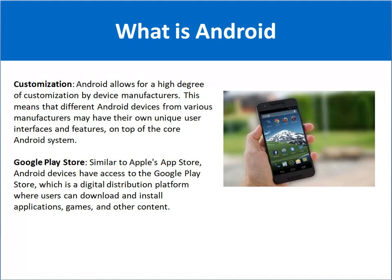Customization is also very possible in the Android operating system. Different manufacturers use Android for their devices and many manufacturers may have their own unique user interfaces and features on top of the core Android operating system. For example, if you are using a Samsung mobile it has certain features; if you are using a Xiaomi mobile it has different features; and if you are using a Google mobile it has yet other features — but all of these are based on the Android operating system, with their own interfaces.